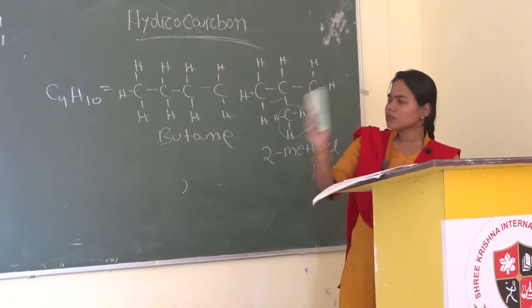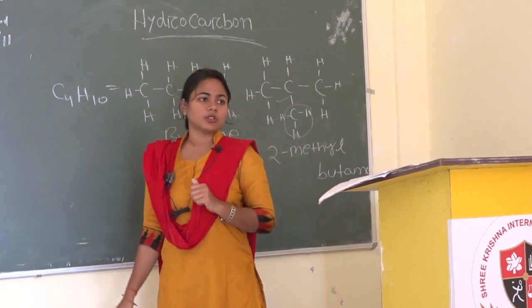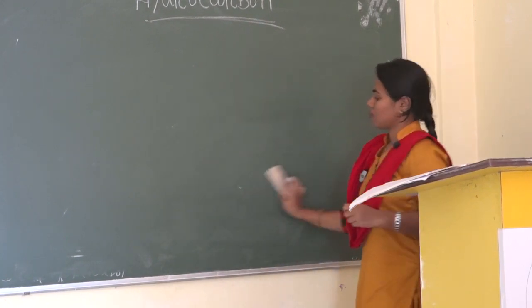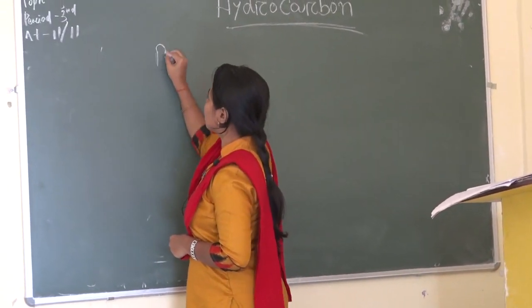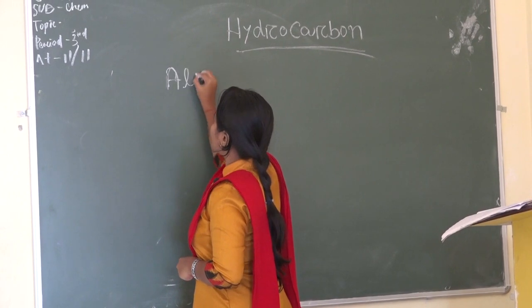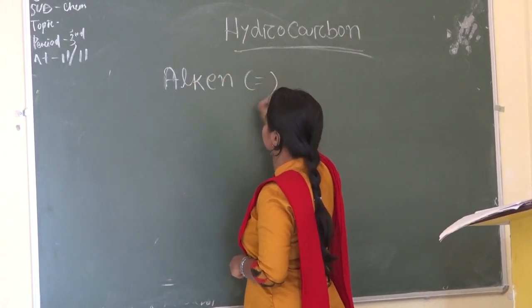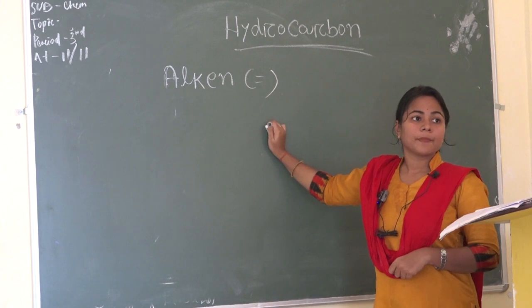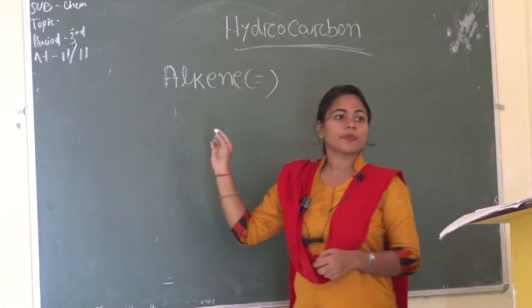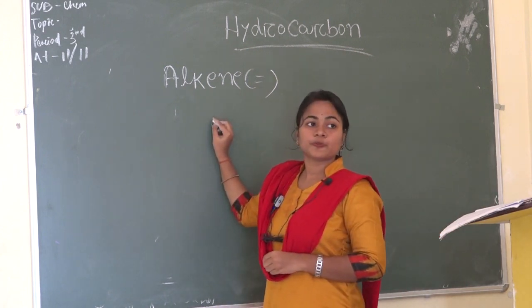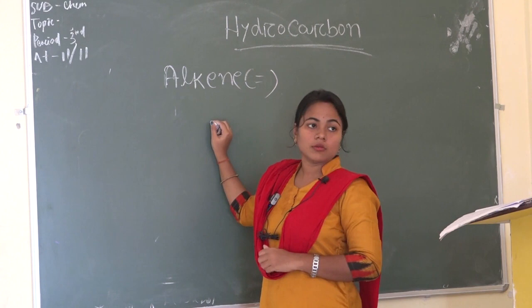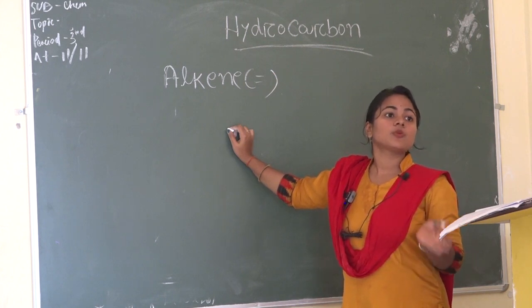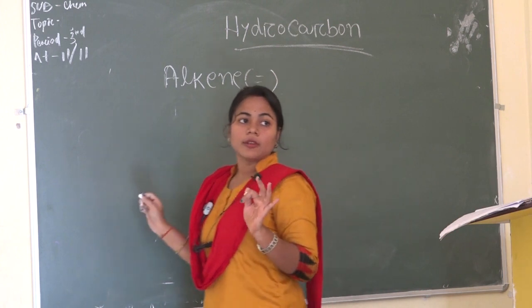Then, alkene. Alkene has a double bond structure. For alkene, the suffix A-N-E changes to E-N-E. So ethene, then propene. And for alkyne, the suffix is Y-N-E — ethyne, propyne, butyne.